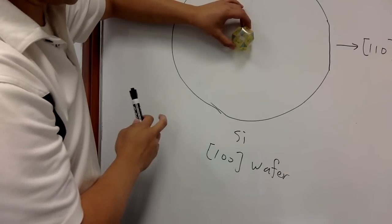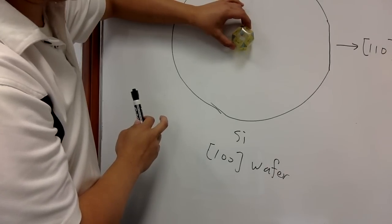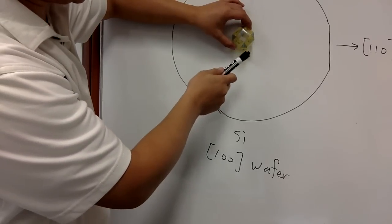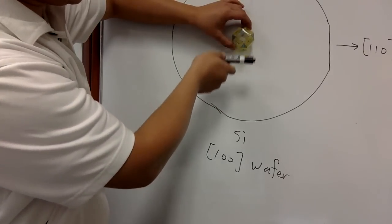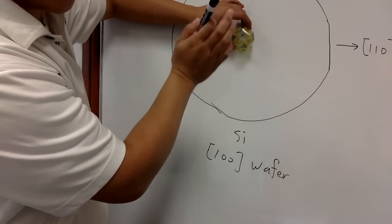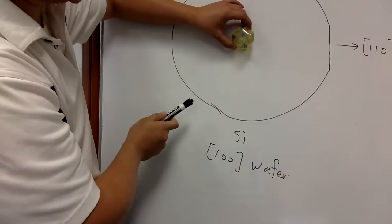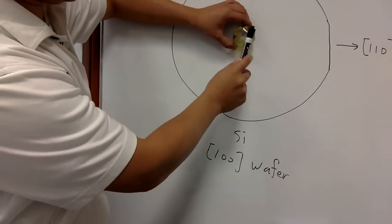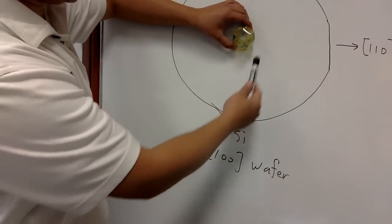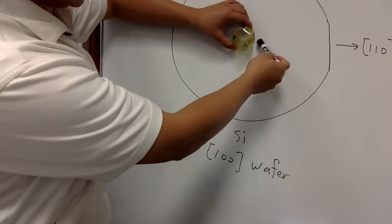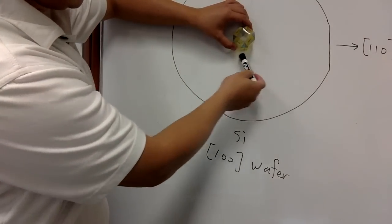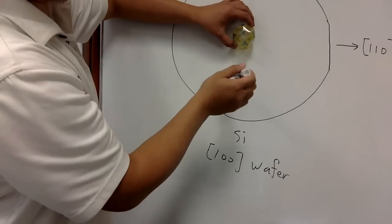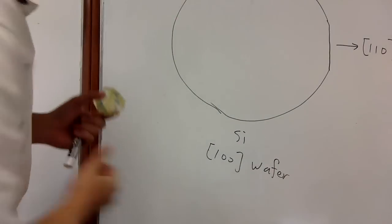Pay attention to your [111] direction. You have four [111] directions: one is tilted here, and the other four are on the other side — one, two, three, four.